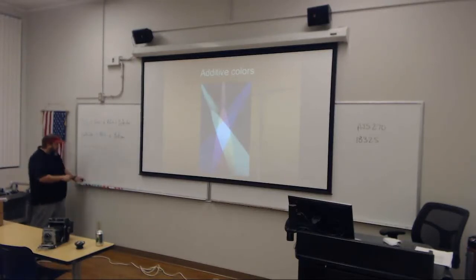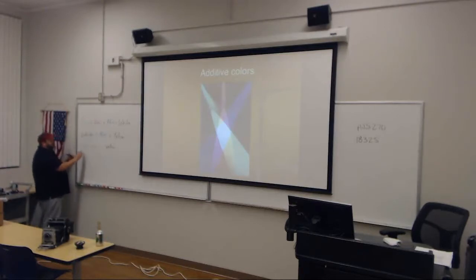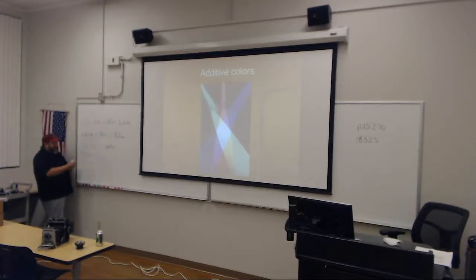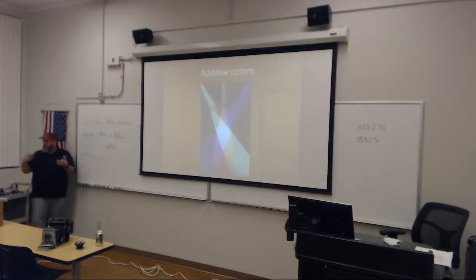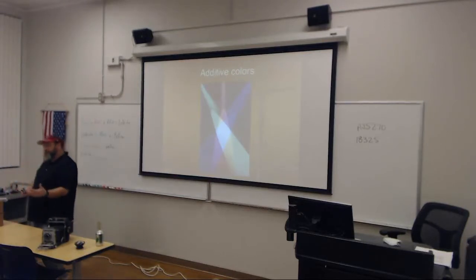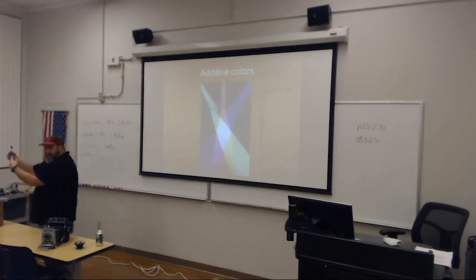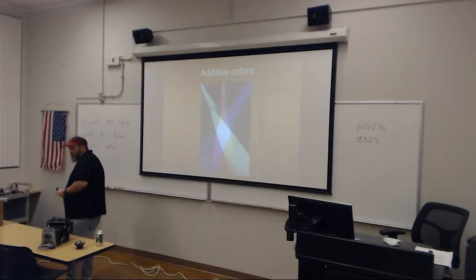Let's write that as an equation. If you take white — which is all three together — and subtract out the green, what would be left over? Blue and red. And if you mix blue and red together, you get magenta. Then, what if we took white and eliminated the red? What would be left over? Green and blue — and that makes cyan, exactly right.